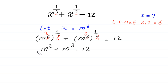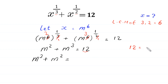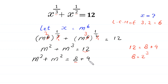Now we rearrange these two terms — we write m cubed first: m cubed plus m squared is equal to 12. This 12 can be written as 8 plus 4. Because 8 is the same as 2 cubed and 4 is the same as 2 squared, we write 8 with m cubed and 4 with m squared.